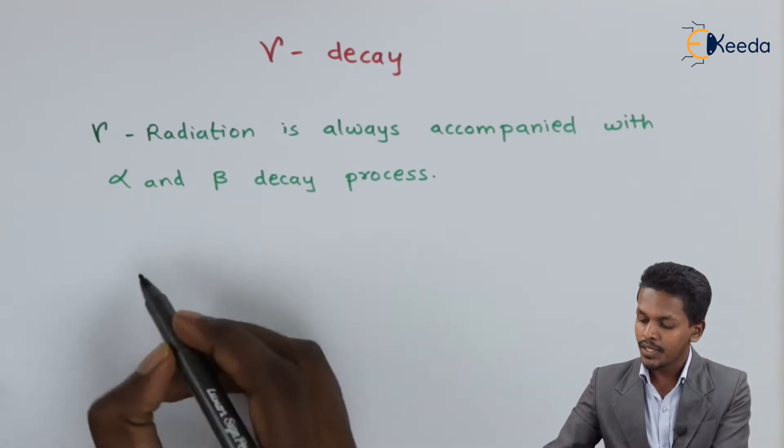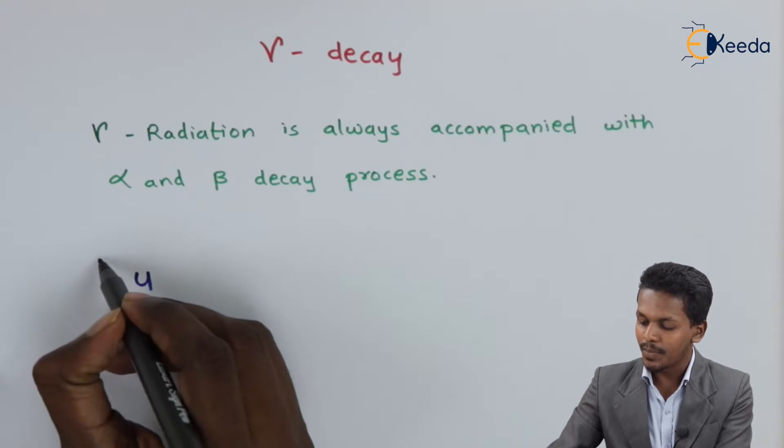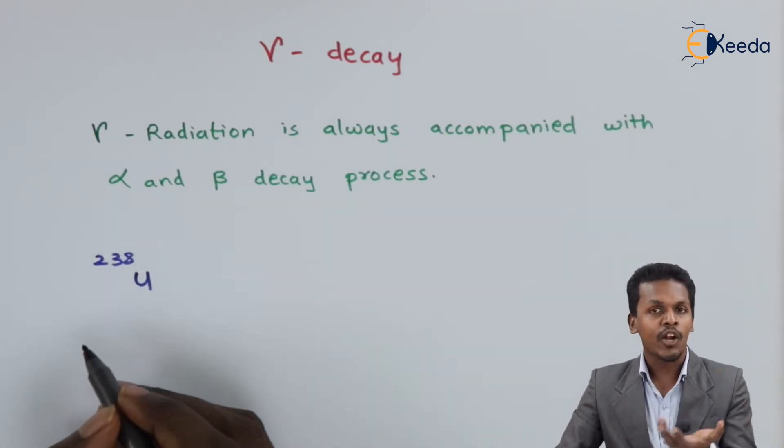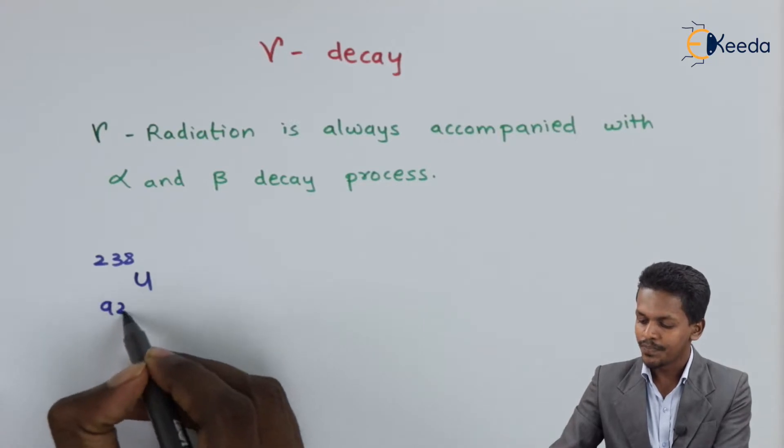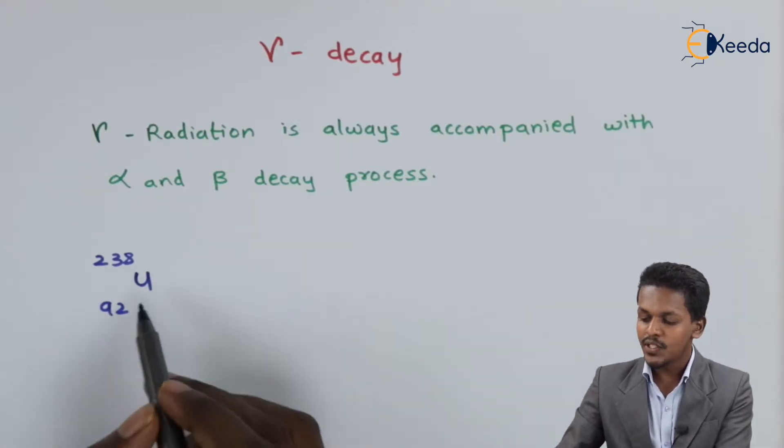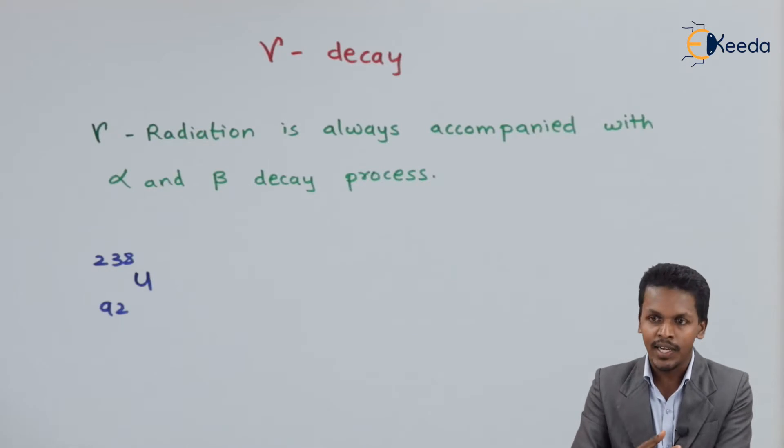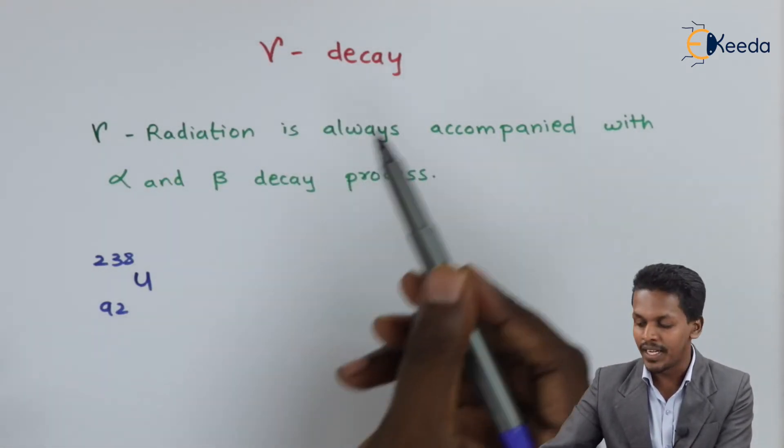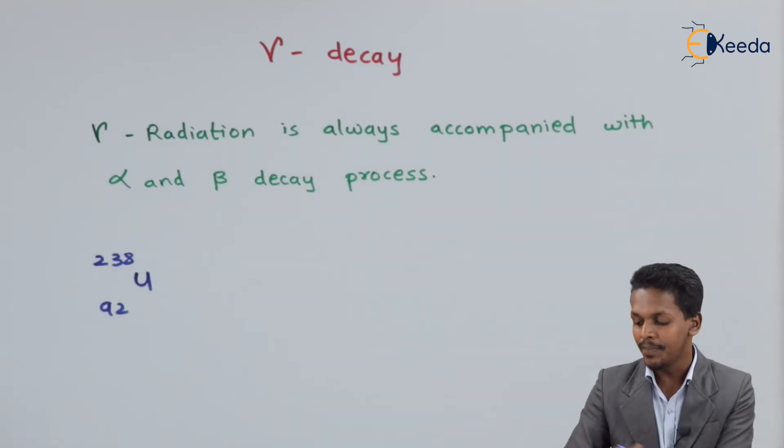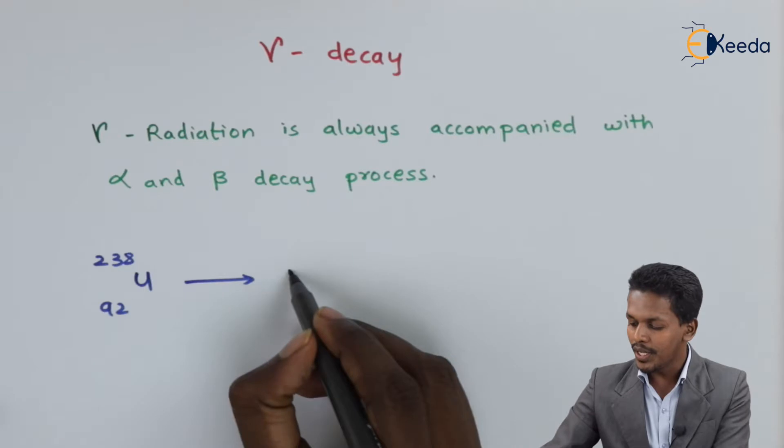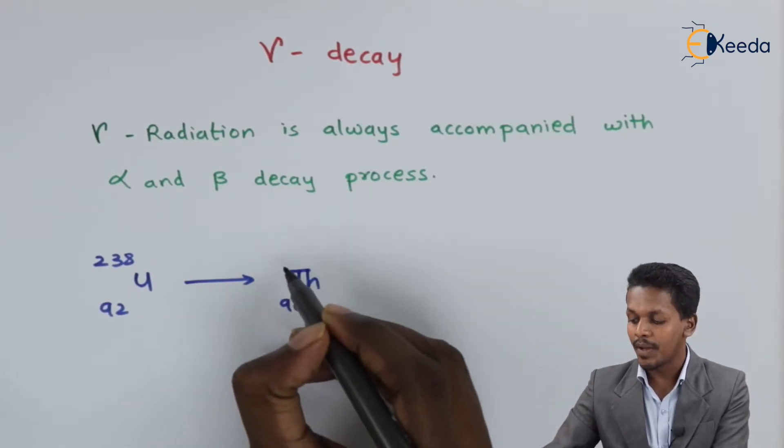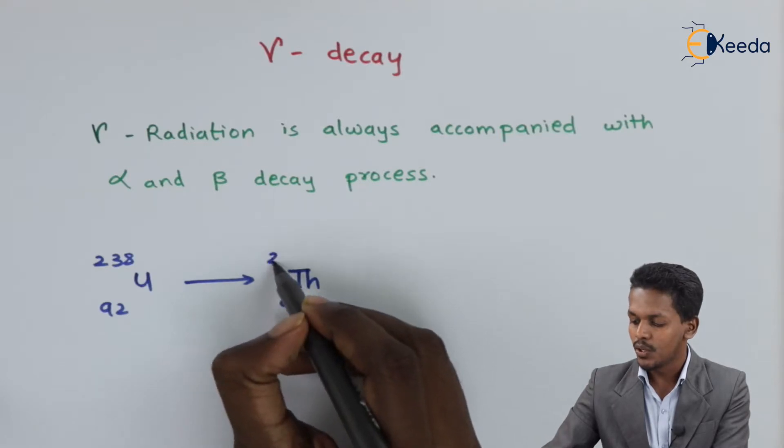Let me take an example of uranium having atomic mass number 238 and atomic number 92. Suppose this uranium undergoes alpha decay. It will produce thorium having atomic number 90 and atomic mass number 234.